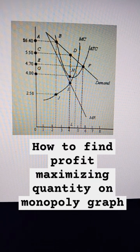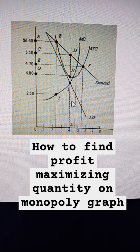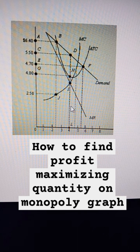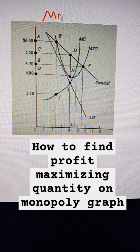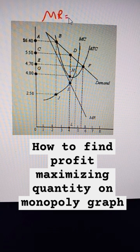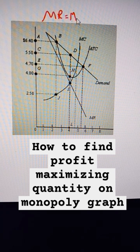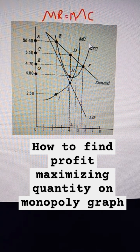This is a monopoly firm graph, and so if we want to know what profit maximizing output is, we're going to look for where MR equals MC, which stands for marginal revenue equaling marginal cost.